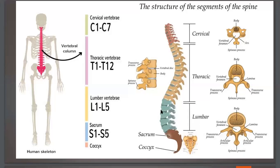If you see the complete vertebral column, we have seven cervical vertebrae numbered C1 to C7, twelve thoracic vertebrae numbered T1 to T12, five lumbar vertebrae numbered L1 to L5, and five sacral vertebrae which have fused to form one single sacrum bone. At the tip of the sacrum we have the coccyx.